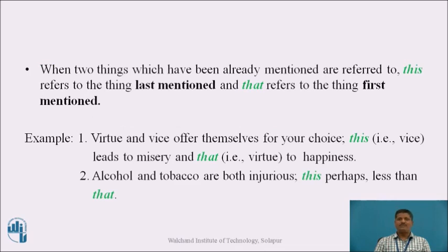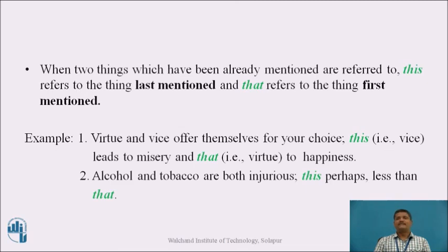When two things which have been already mentioned are referred to, 'this' refers to the thing last mentioned and 'that' refers to the thing first mentioned. Example one: 'Virtue and vice offer themselves for your choice. This leads to misery and that to happiness.' Here 'this' refers to vice — the last mentioned — and 'that' refers to virtue — the first mentioned. Example two: 'Alcohol and tobacco are both injurious — this perhaps less than that.' Here 'this' refers to tobacco (last mentioned) and 'that' refers to alcohol (first mentioned).